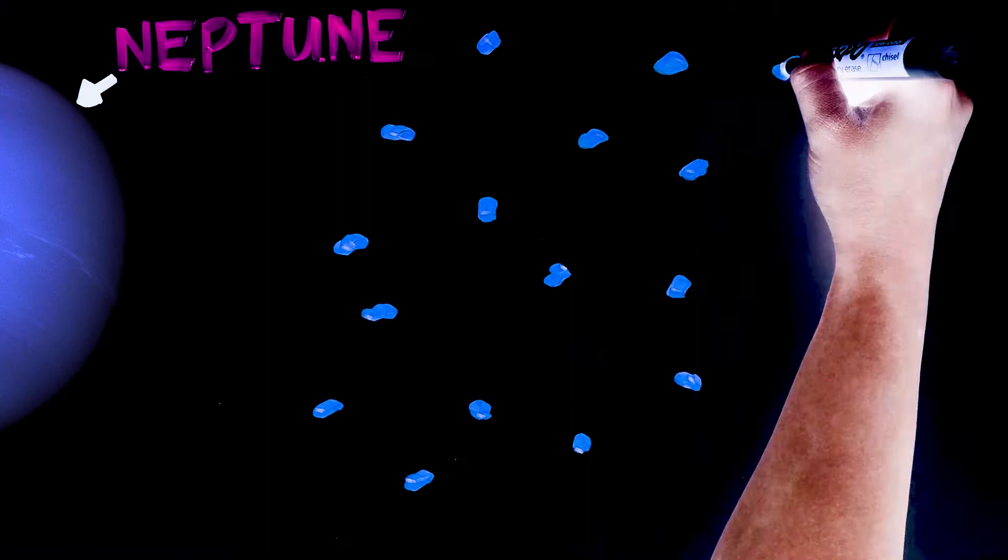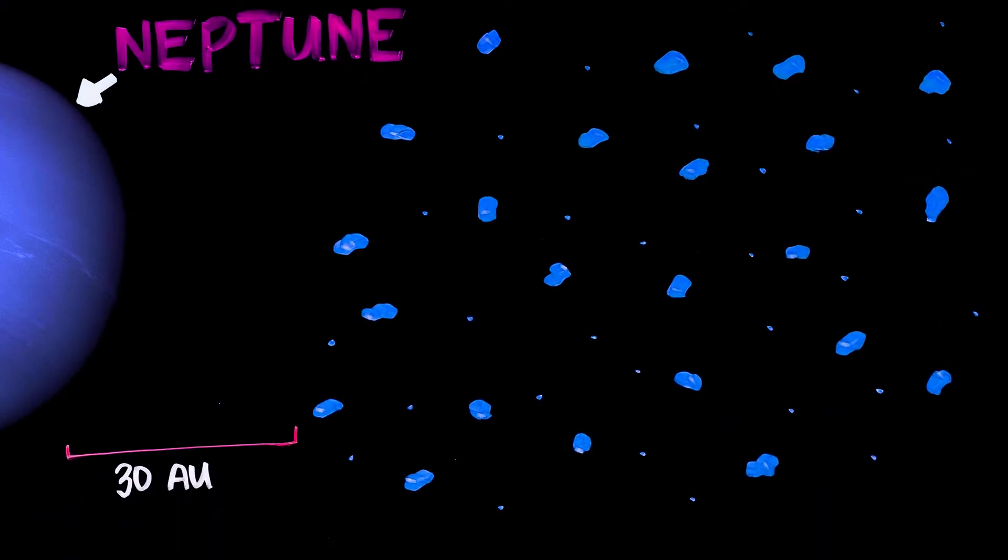From the orbit of Neptune, it extends from about 30 astronomical units, or AU, to 55 AU from the Sun.